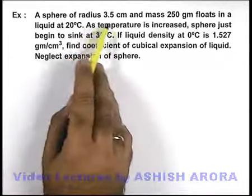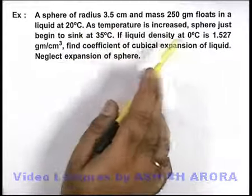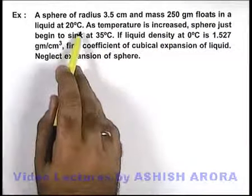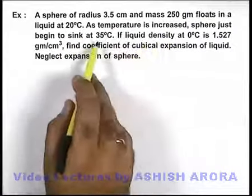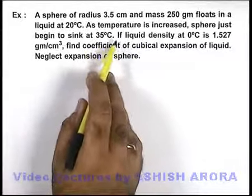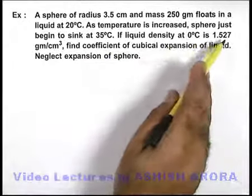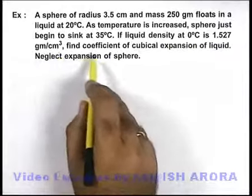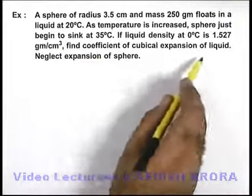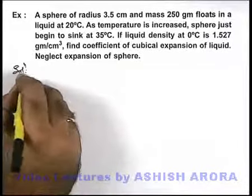In this example, we are given that a sphere of radius 3.5 centimeter and mass 250 gram floats in liquid at 20 degree centigrade. As temperature is increased, the sphere just begins to sink at 35 degree centigrade. It is also given that liquid density at zero degree centigrade is 1.527 gram per centimeter cube. We are required to find coefficient of cubical expansion of liquid, and we need to neglect the expansion of sphere.